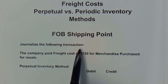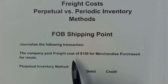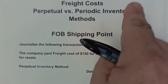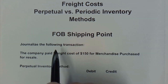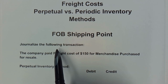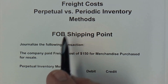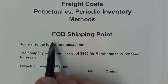I did a prior video showing how to account for the actual purchases of the merchandise for inventory — if you missed that video, I've linked it up here for you. In this video we're going to talk about the freight costs to deliver that merchandise to the company that will resell it, and here we're going to talk about FOB shipping point.